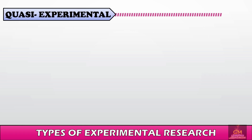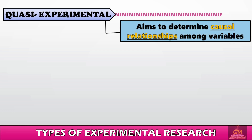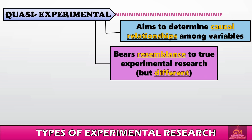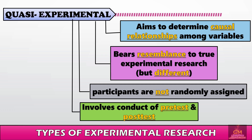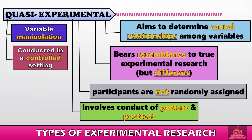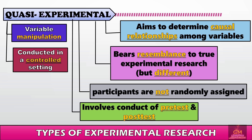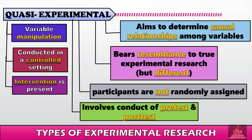Another experimental research design is quasi-experimental research. Similar to true experimental research, it aims to determine causal relationships among variables. However, in quasi-experimental research, participants are not randomly assigned and it involves both a pre-test and post-test. Other characteristics include variable manipulation, a controlled setting, and the presence of intervention.